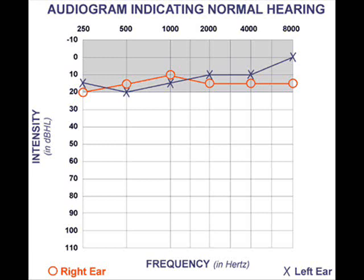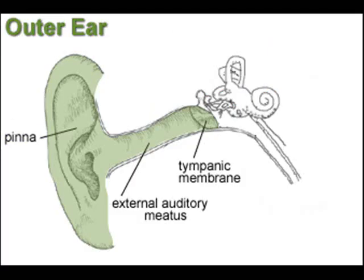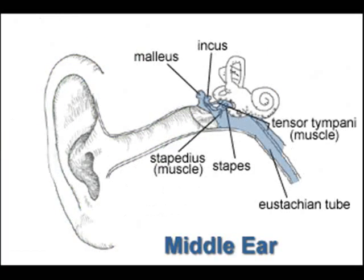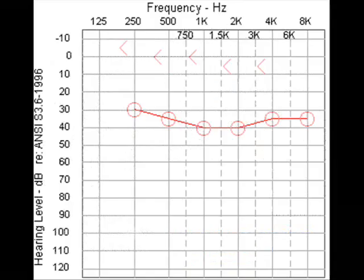This is the pattern for a normal hearing individual. When the outer ear or middle ear are affected, it results in conductive hearing loss, and the audiogram pattern looks like this, with AC affected and BC unaffected.